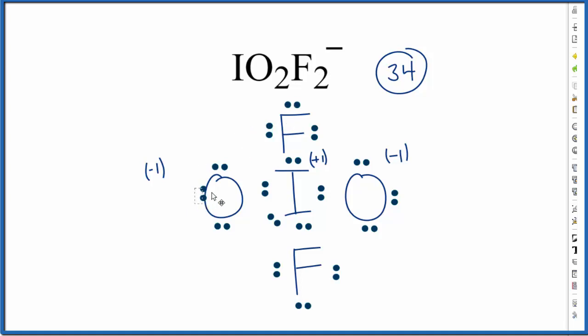We could move these electrons here and form a double bond. That makes the formal charge here zero and also on the iodine. For the sake of symmetry, I would also move this to make a double bond here, makes this oxygen zero. Then the iodine here is minus one and that matches the charge on our ion up here, minus one.